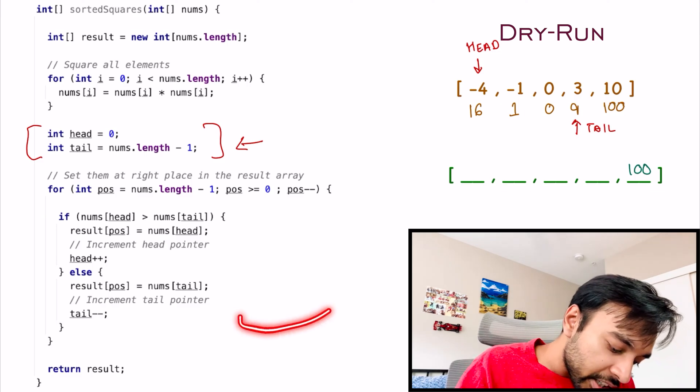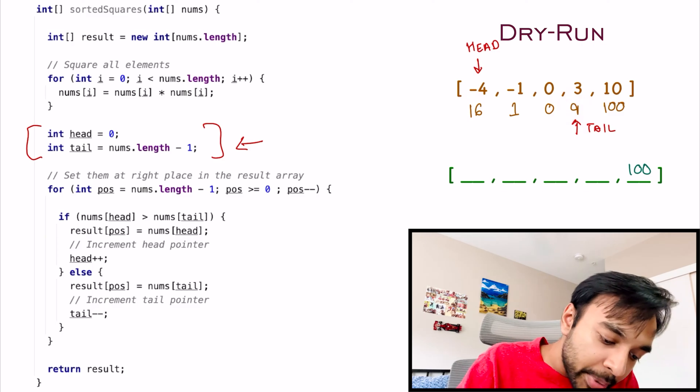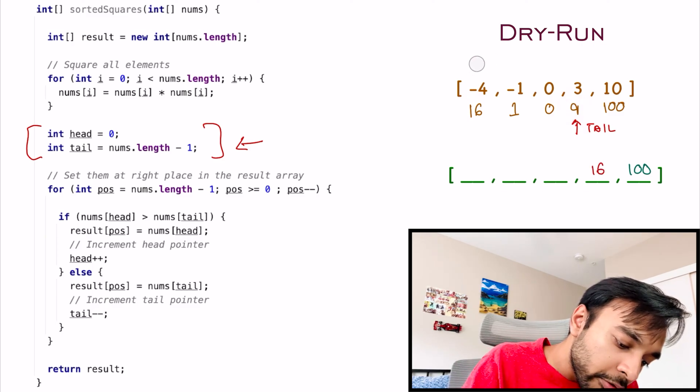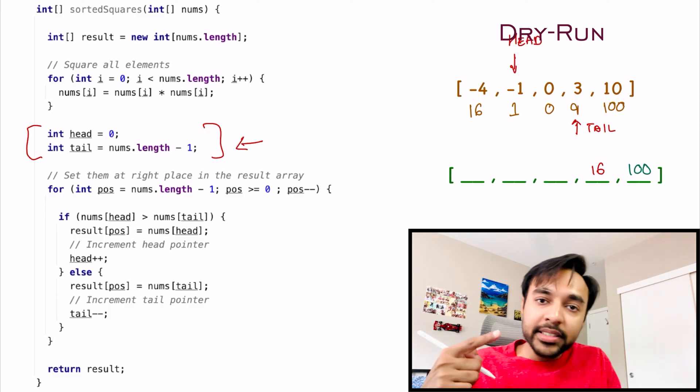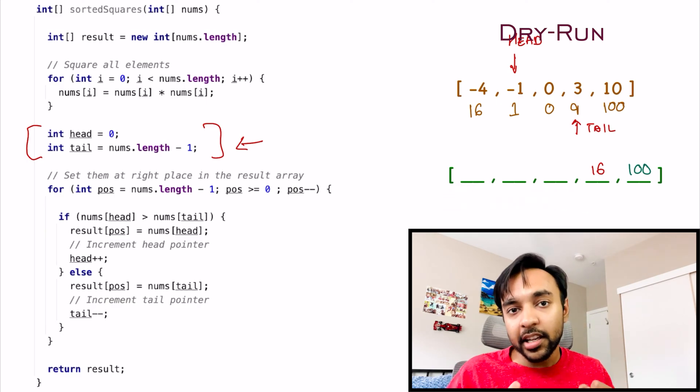In the next iteration, this loop runs again and this time I will be comparing 16 and 9. Once this happens, I will get 16 in my resultant array and the head pointer will move one step ahead. Similarly, this loop will continue to go on and ultimately you will fill up your entire array.